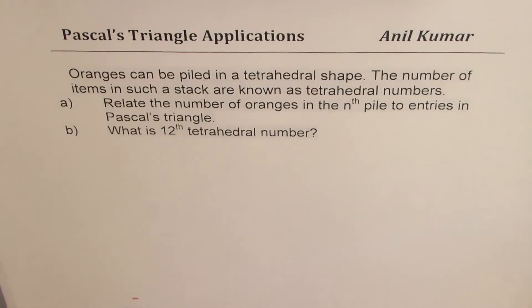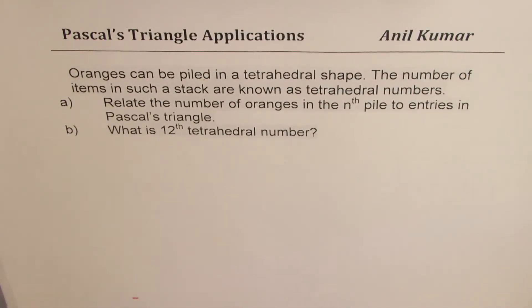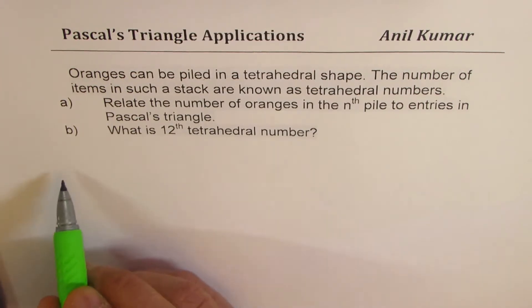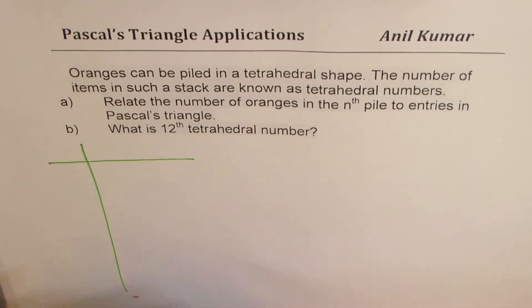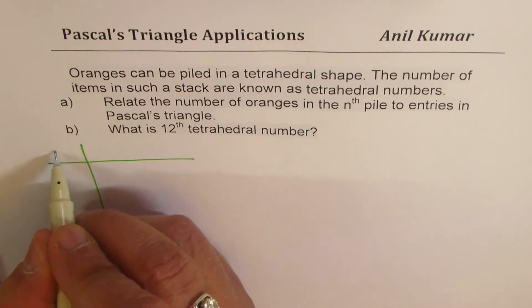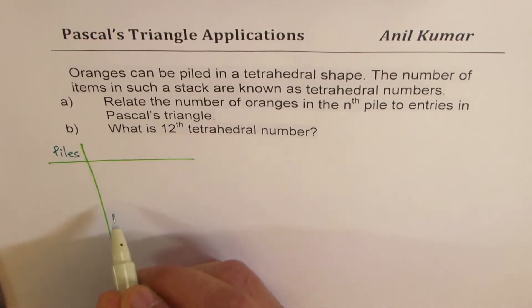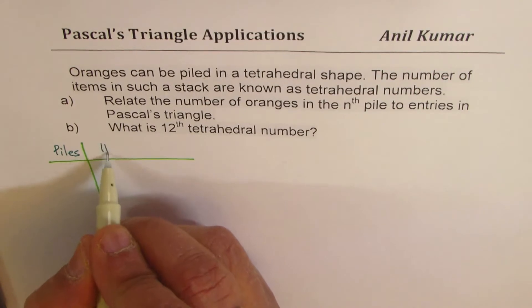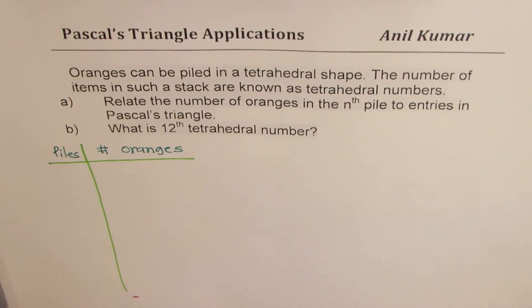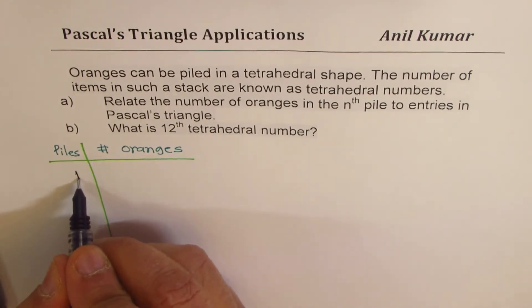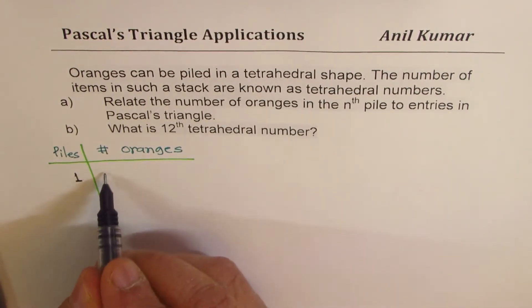We just saw how we can make a pile of oranges which will give us the tetrahedral numbers. Now let us create a table to record and then find the relation between the numbers and Pascal's triangle. So let us say that we put number of piles here and then number of oranges.